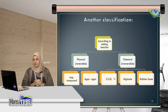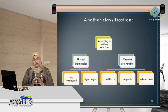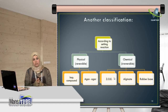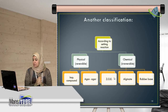Materials that set by physical reaction include impression compound and agar-agar. For materials that set by chemical reaction, these materials undergo a chemical reaction during setting that cannot be reversed — it occurs one time only, so we call them irreversible impression materials. Examples include zinc oxide eugenol, alginate, and rubber base.